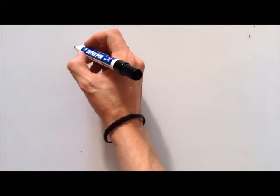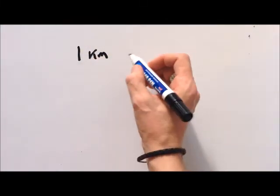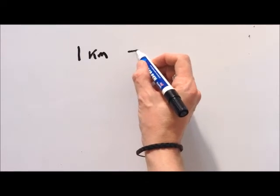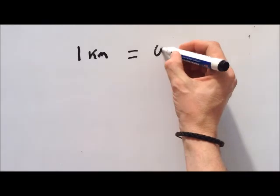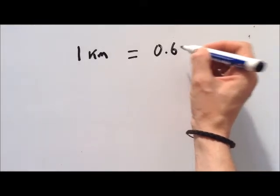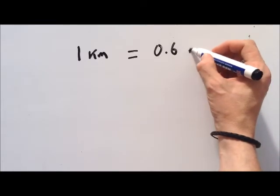We know that 1 mile equals roughly 1.6 kilometers. We know that 1 kilometer equals 0.6, roughly, of a mile. So we write this up here: 1 kilometer is the same as 0.6 of a mile.